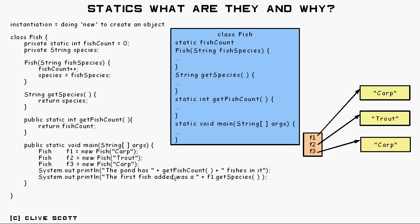So I can say something like get fish count, or index equals fish count, but I can't say get species. I've got to say f1.getSpecies or f2 or f3.getSpecies. I've got to tell you what fish I'm talking about.